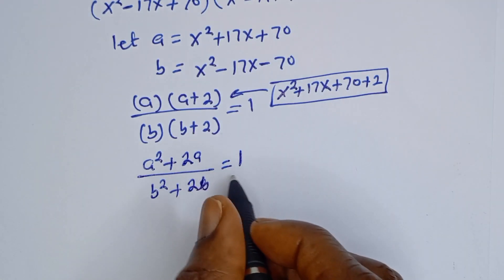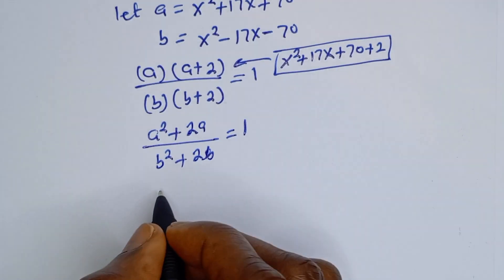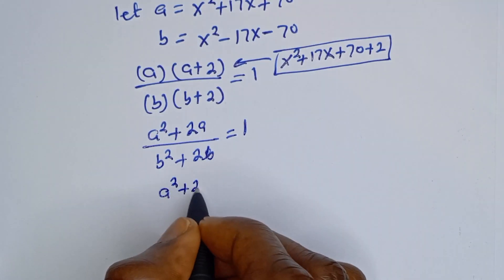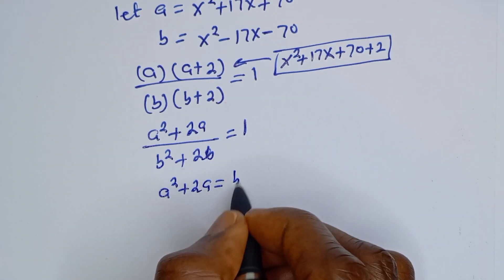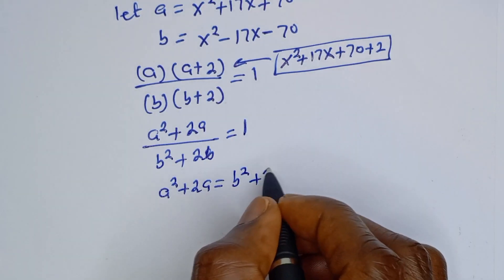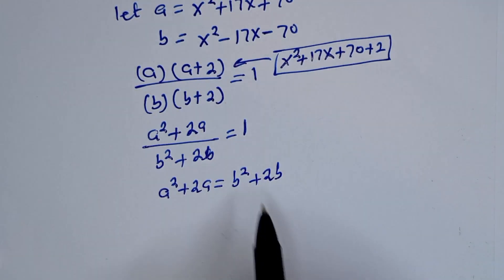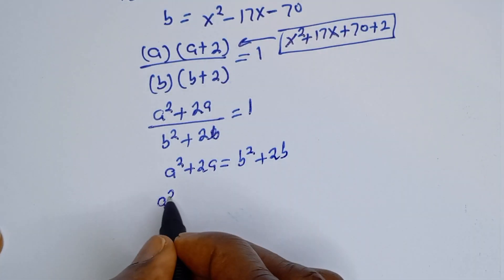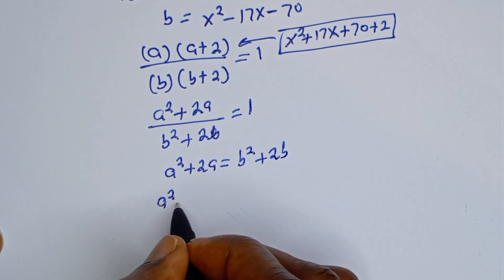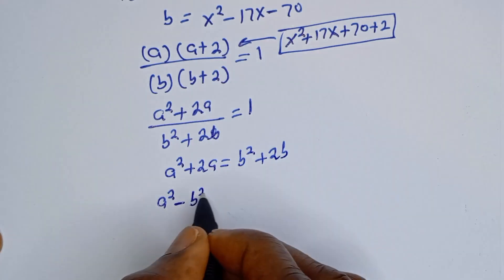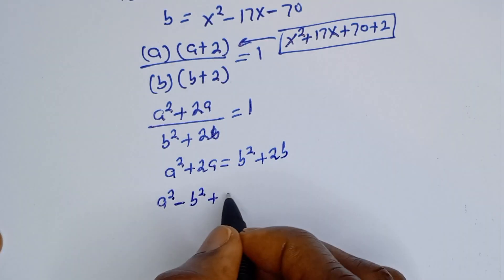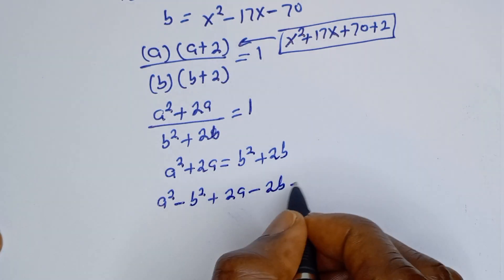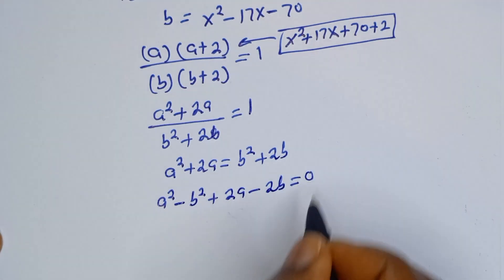From here we can cross multiply. If we cross multiply, we have A squared plus 2A is equal to B squared plus 2B. Now let's bring this to the other side: A squared minus B squared plus 2A minus 2B is equal to 0.